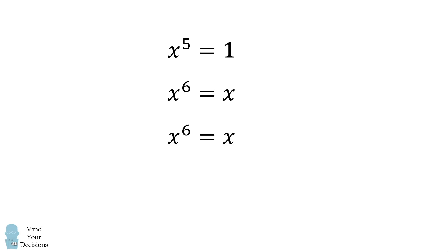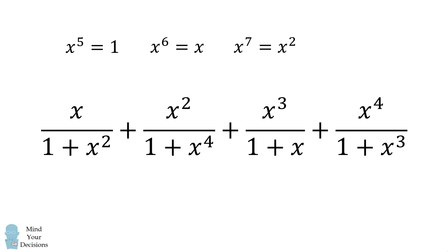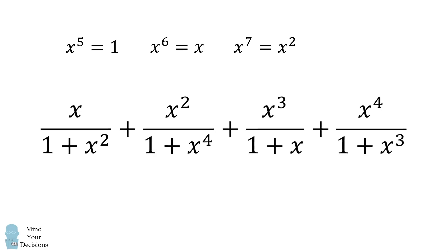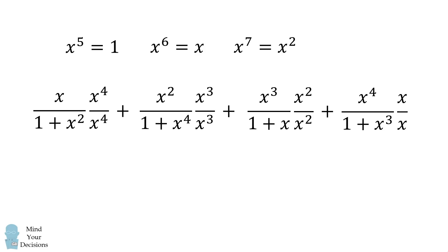We'll take this equation and multiply both sides by x again to get x to the power of 7 is equal to x squared. From here, we are going to modify each of the fractions. Let's make each numerator x to the power of 5: the first fraction multiplies by x to the 4th over x to the 4th, the second by x cubed over x cubed, the third by x squared over x squared, and the last by x over x.